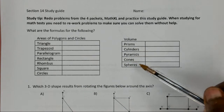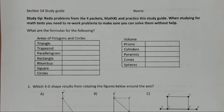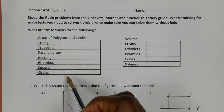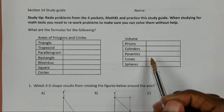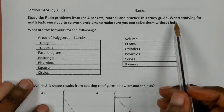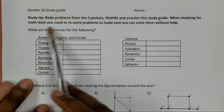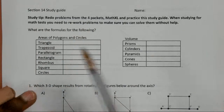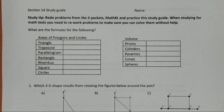The volume formulas given on your formula sheet are very basic. You have to know what the B means and what the area formula for that particular shape's base is. Whenever you're studying for math tests, you want to make sure you're reworking problems. Don't just read through and think you've got it — cover up answers and redo work on another sheet to make sure you understand things you didn't get the first time.